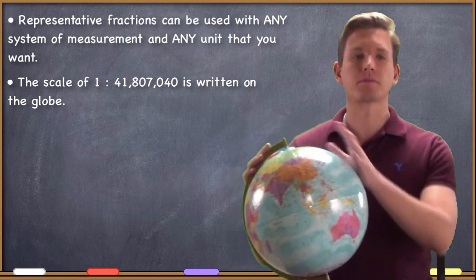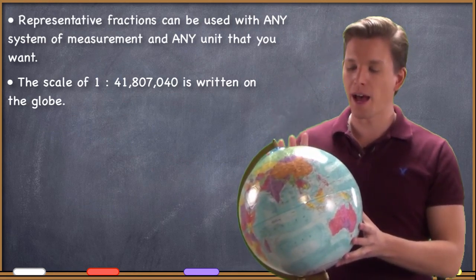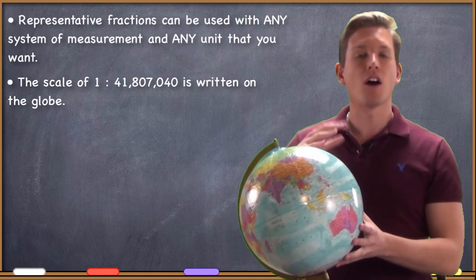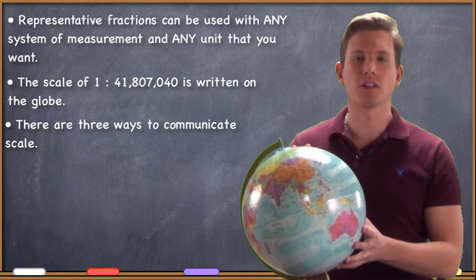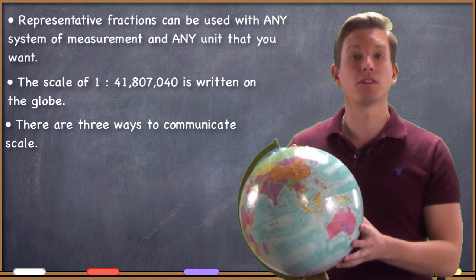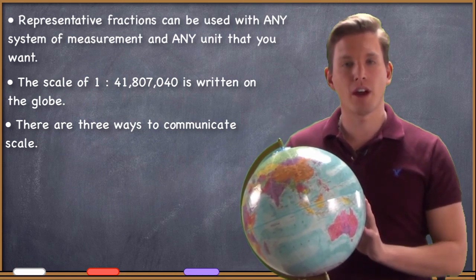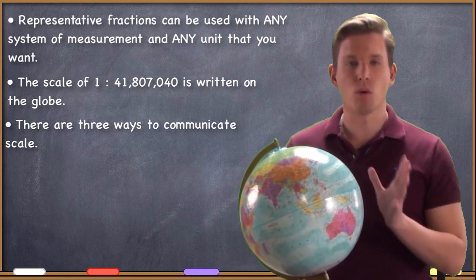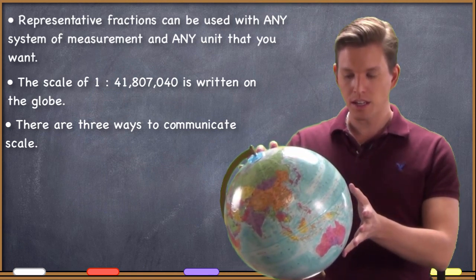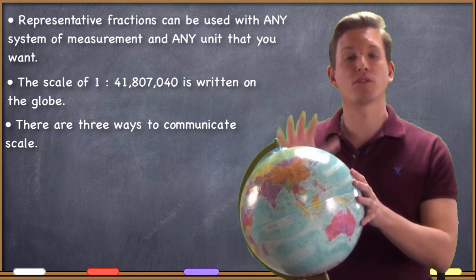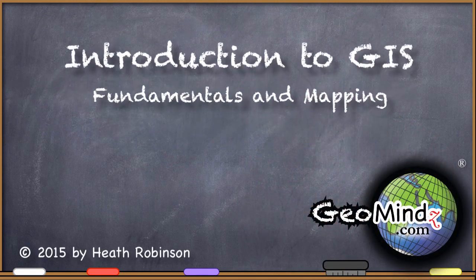When talking about maps — which we're about to move on to — there are three ways you communicate scale. You could use them for globes too, but you very frequently find scale communicated in three different ways on a map. A representative fraction, like we just looked at, is one of them. Let's go forward and look at three different ways that we can communicate scale information. See you next time.